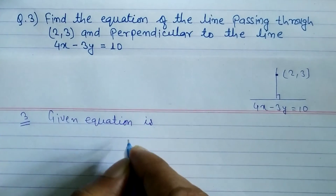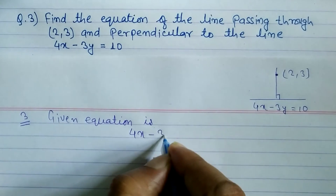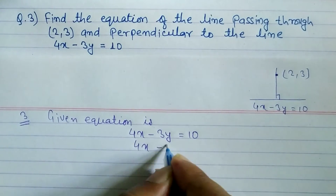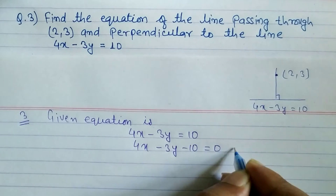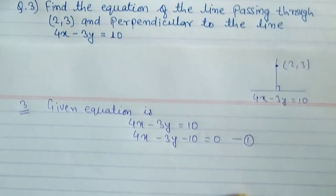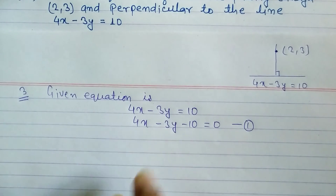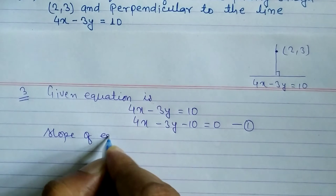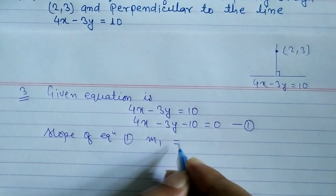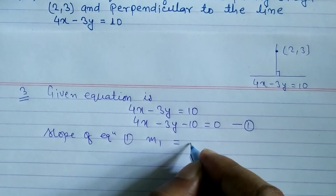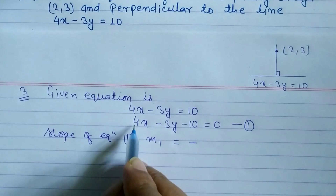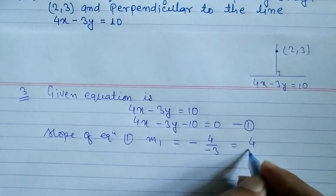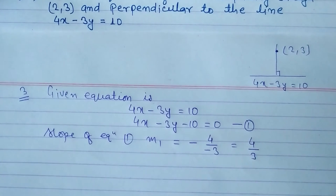The given equation is 4x minus 3y equals 10, or we can write 4x minus 3y minus 10 equals 0 — this is equation 1. Now we have to find the slope of this line. The slope m1 equals minus coefficient of x divided by coefficient of y, which gives us minus (4) divided by (minus 3), so m1 equals 4 by 3.